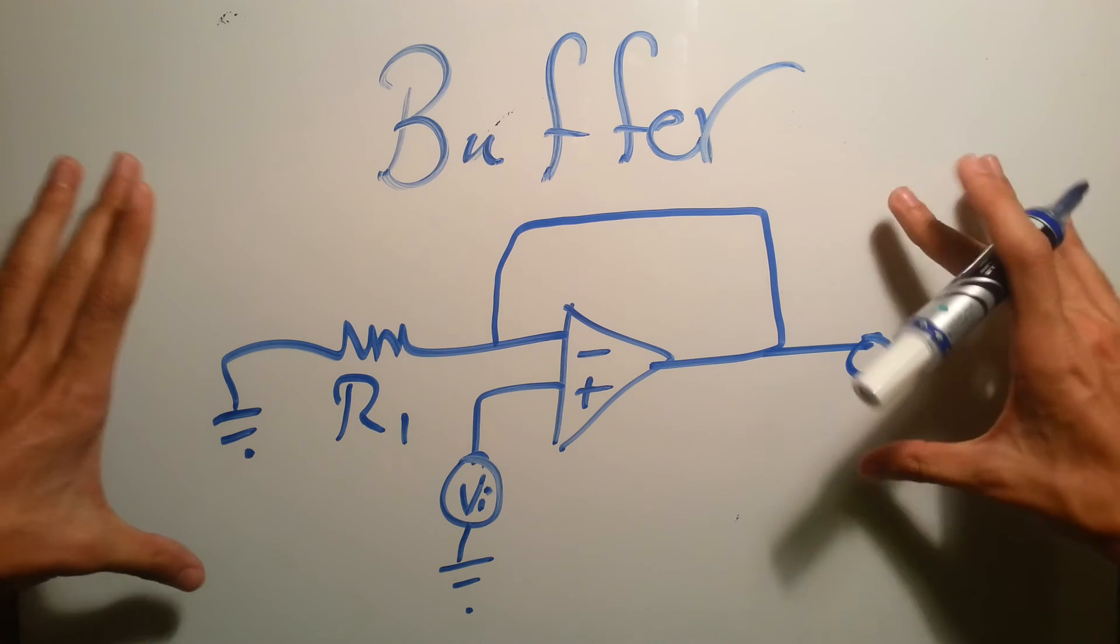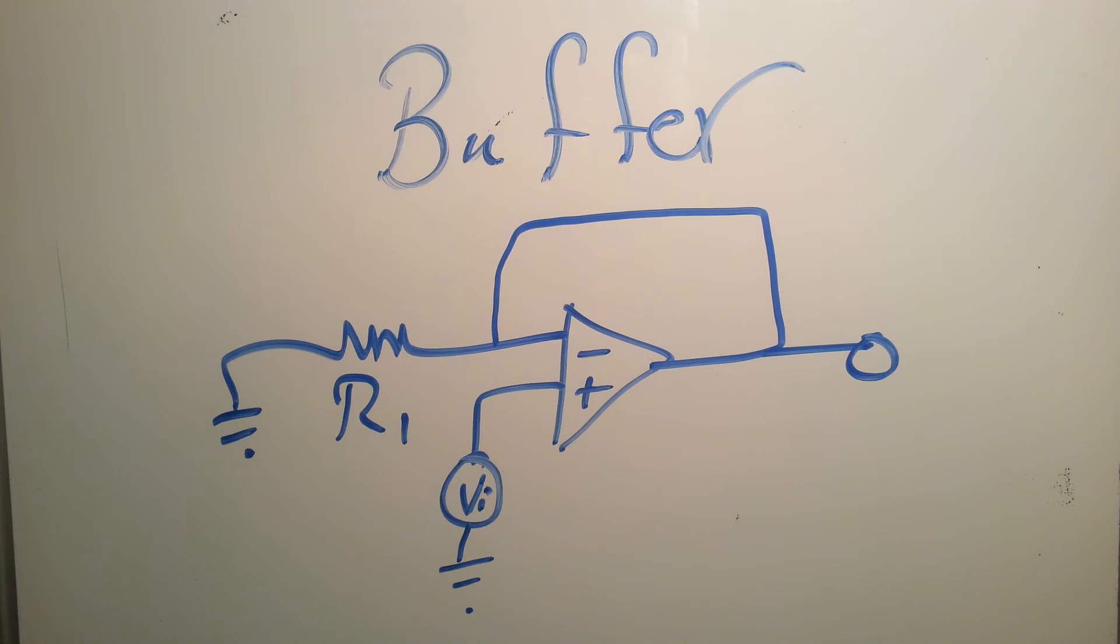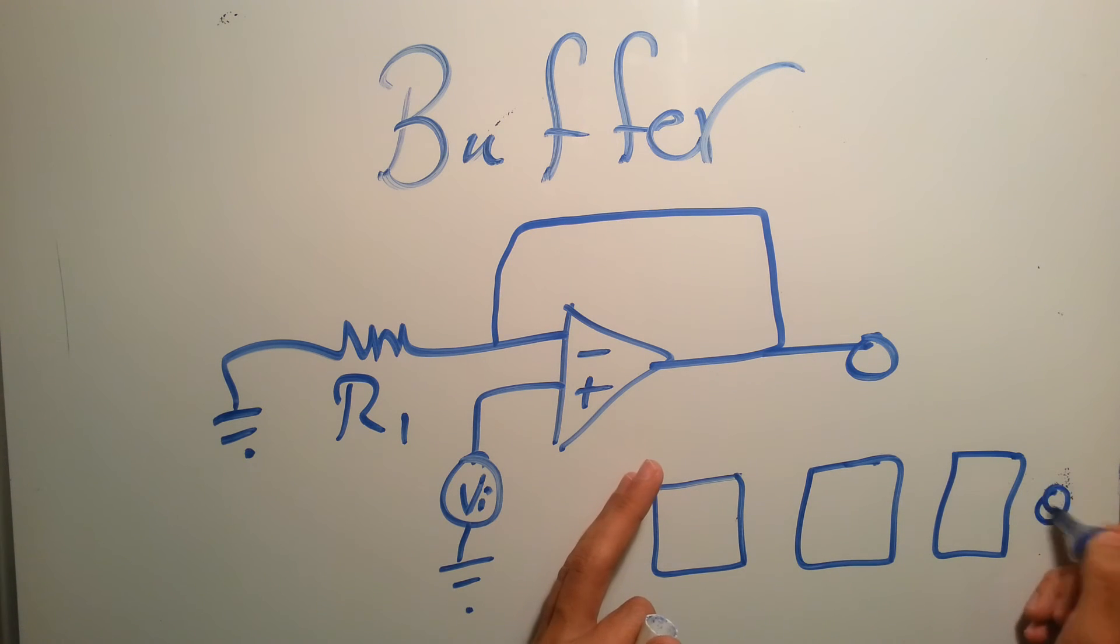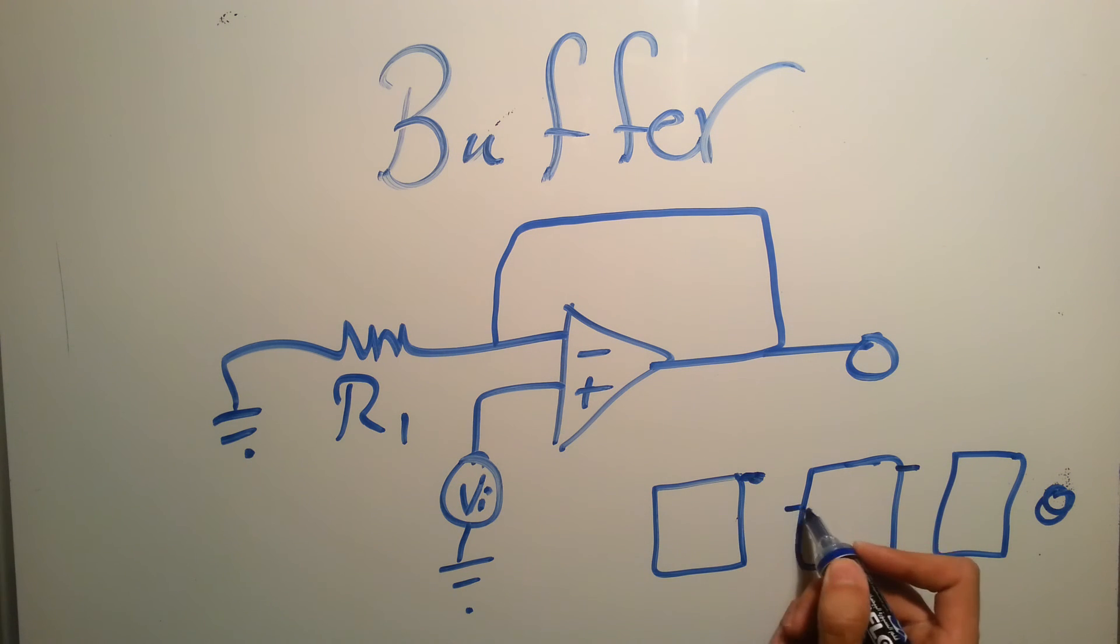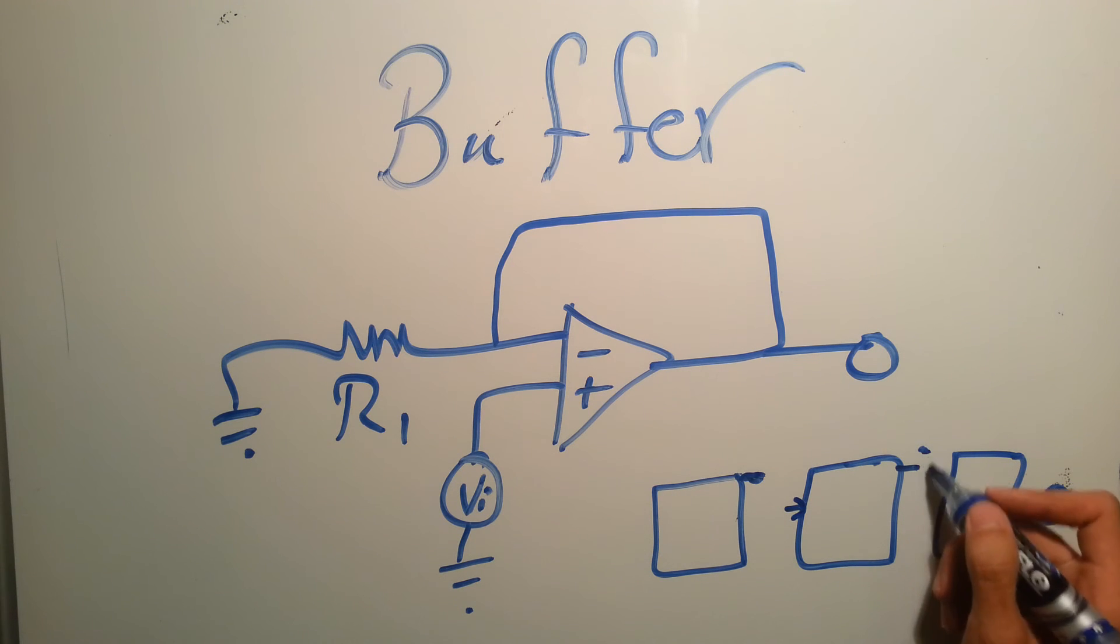The buffer is such an important electronic circuit. Whenever you're having more than one circuit all connected, you need a specific output. When you don't connect them all together, you get your expected voltage. But whenever you really connect them all together, you will end up not having your output. You might have zero or some output which is less than the output you wanted to get.